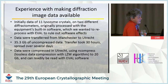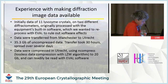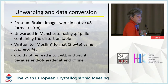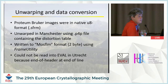Once the data were in Utrecht, they were compressed using a lossless data compression algorithm, reducing to 20 gigabytes. The advantage of EVAL is that it can read compressed data and decompress on the fly, which is very convenient. The Bruker images were in native U8 format — a single-byte format which is very efficient when pixel intensities are not too high.